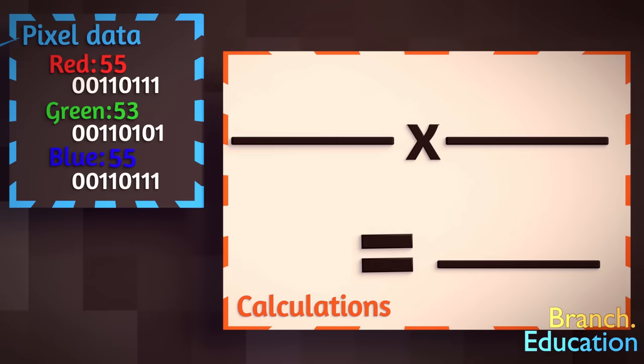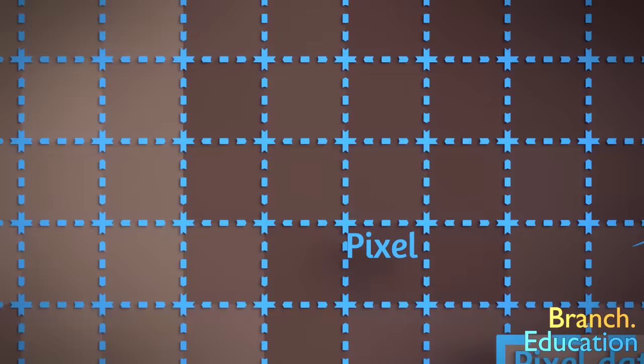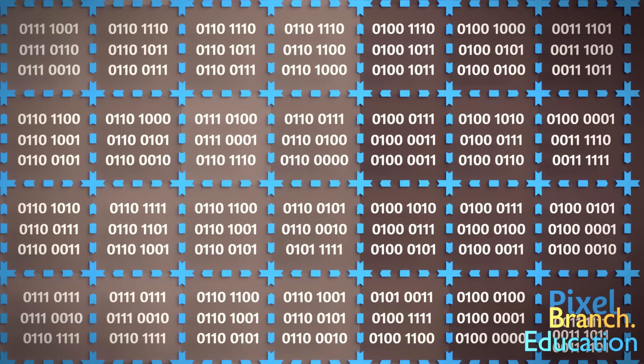Each of these three numbers, from 0 to 255, is represented by 8 bits in binary, or 8 ones and zeros, you know, because computers work in binary. So, three colors, red, green, and blue, and 8 bits each, means each pixel takes 24 bits to define its color.